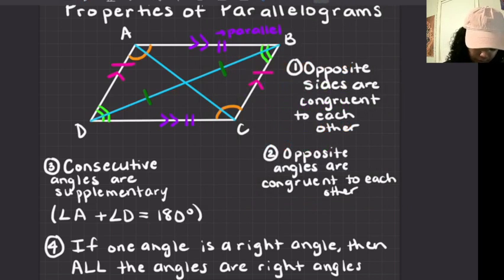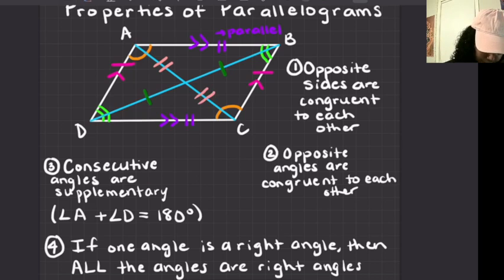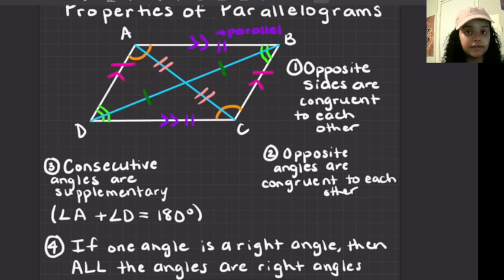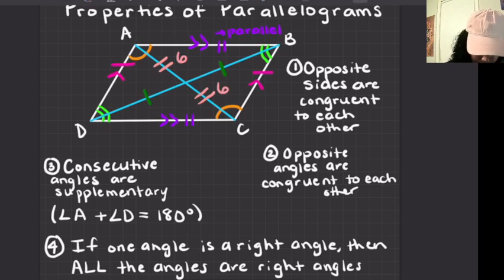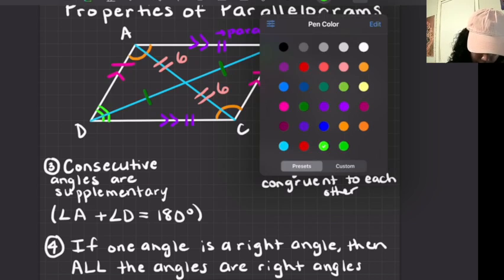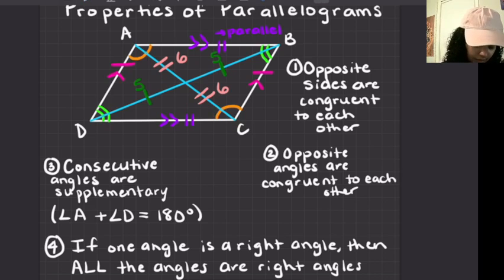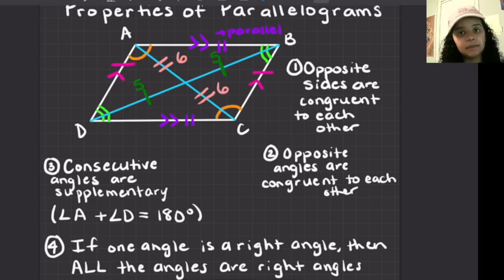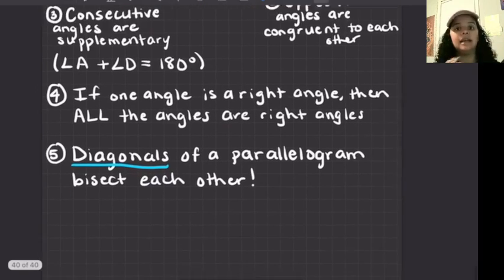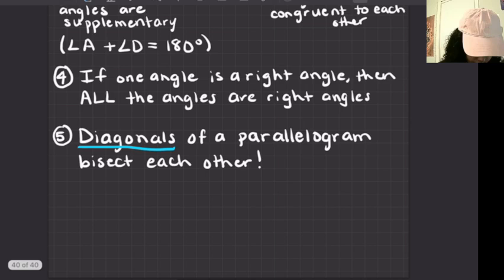BD also cuts AC in half, bisecting that segment. However, this does not mean the diagonals are the same length. For example, one diagonal could be 6 plus 6, measuring 12, while the other is 5 plus 5, measuring 10. They're still bisecting each other — they're just cutting each other in half, not necessarily equal in total length.